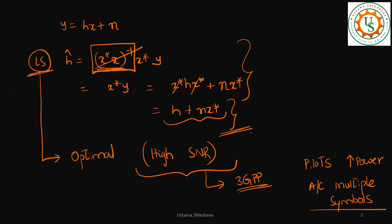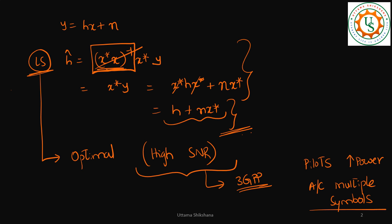That's why the least square solution becomes very simple for channel estimation when pilots are designed properly. But for LMMSE, even if the matrix inversion could be a simpler version in some cases, we still have to do the matrix inversion. That is one drawback here.